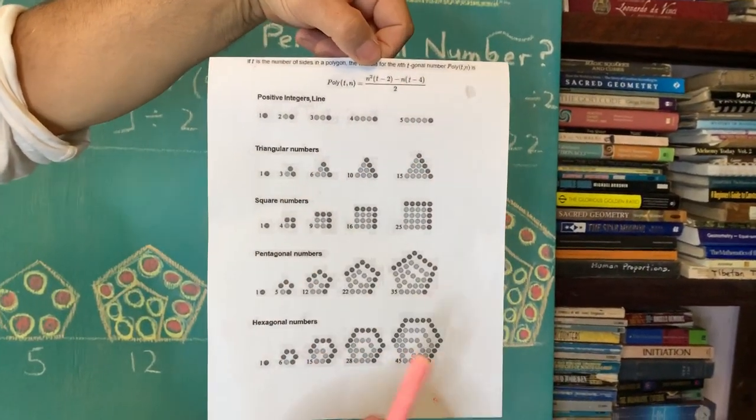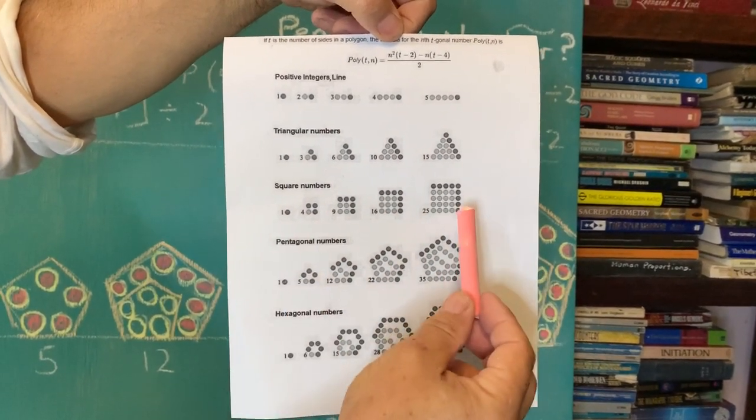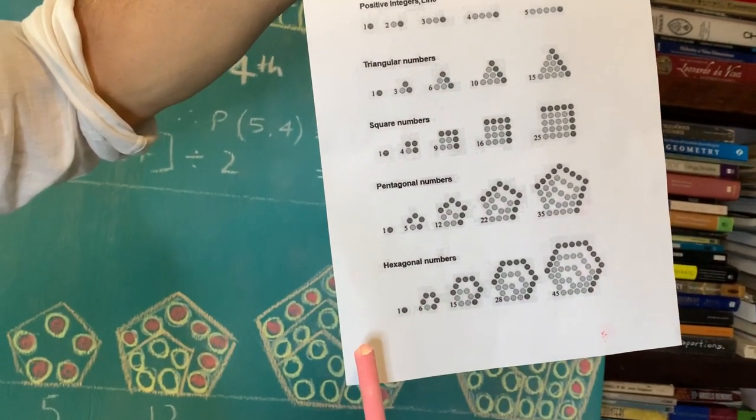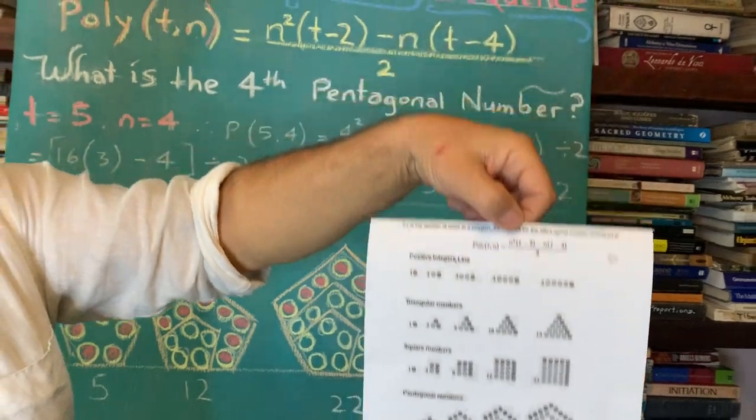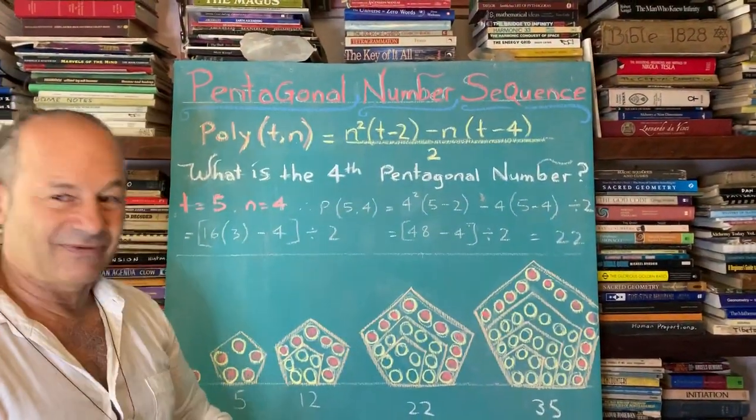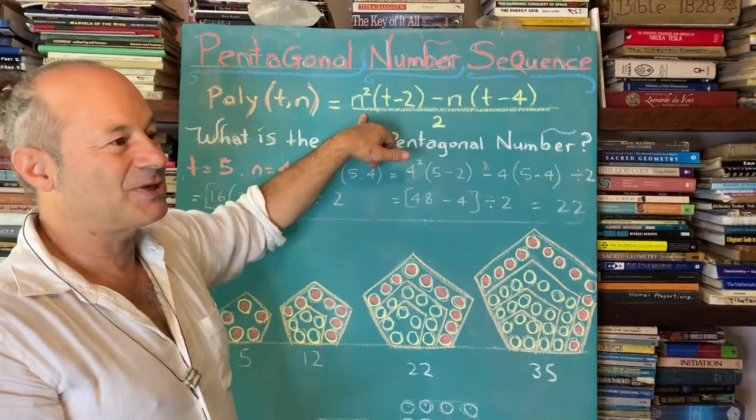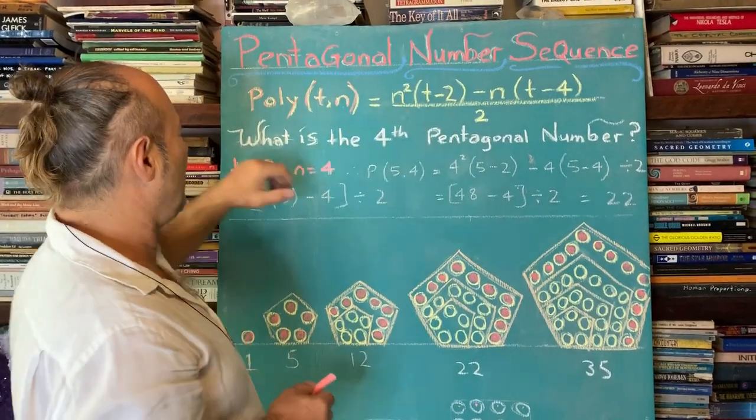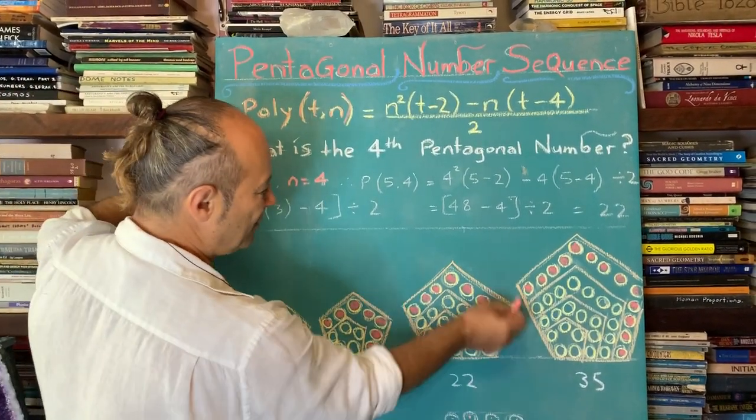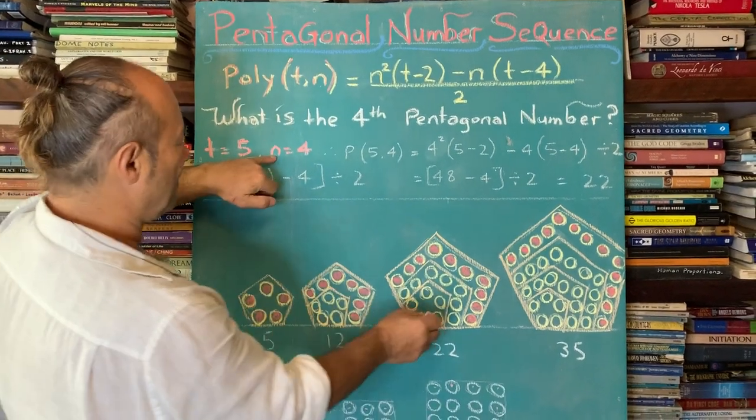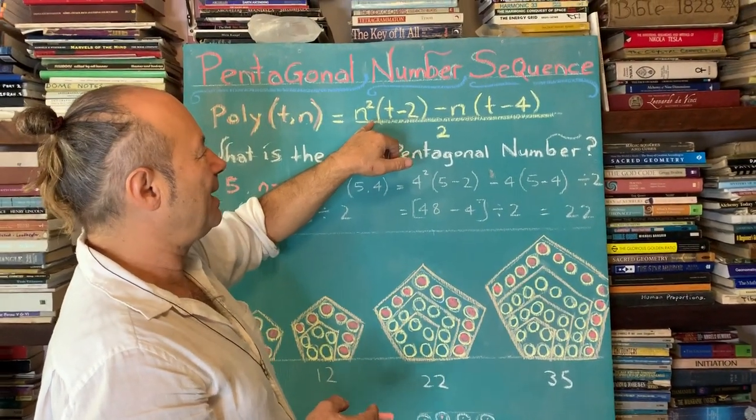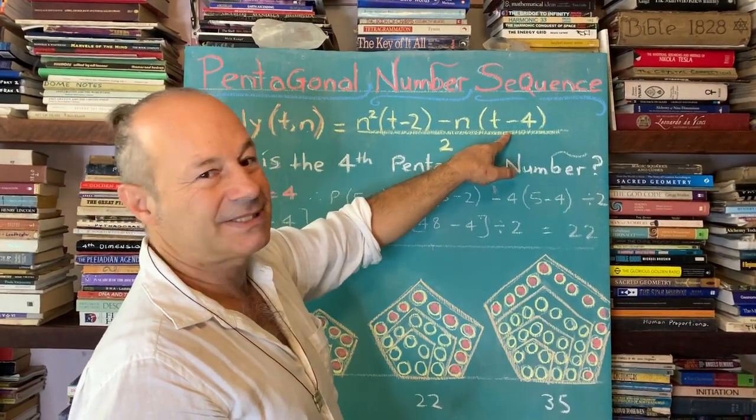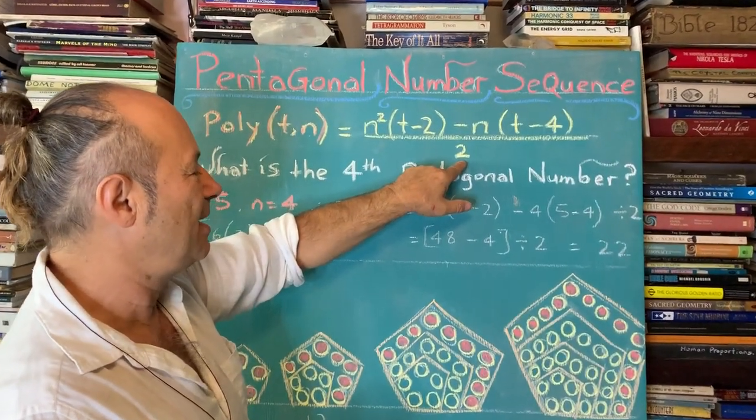You can see this whole chart. There's a universal formula. It looks complicated. We've got triangle numbers, square numbers. Here's the pentagon. And there's even hexagonal numbers and septagonal and octagonal. So this is a universal chart that goes to infinity. And this formula is so special because any number we want in the universe, we plug it into this formula. It says N squared times T minus two minus N times T minus four, and we take the midpoint called divide by two.